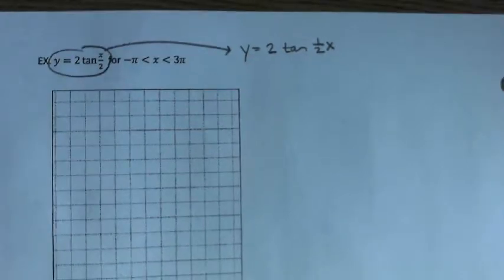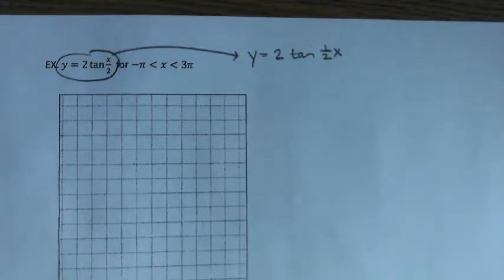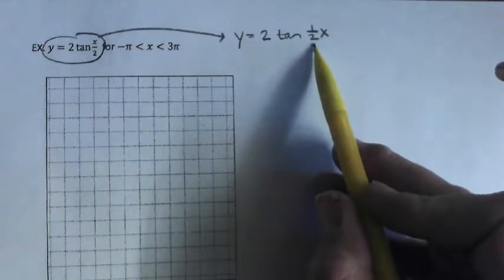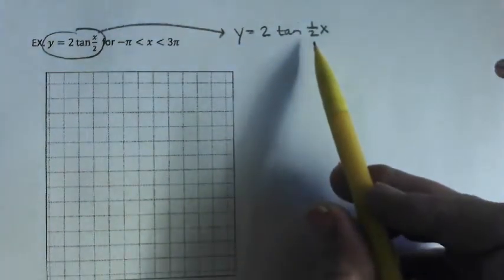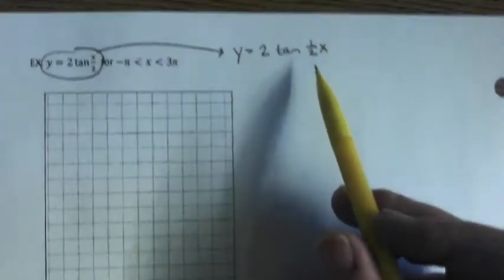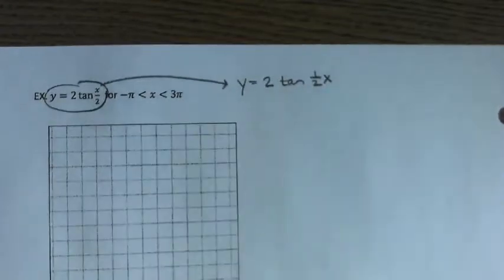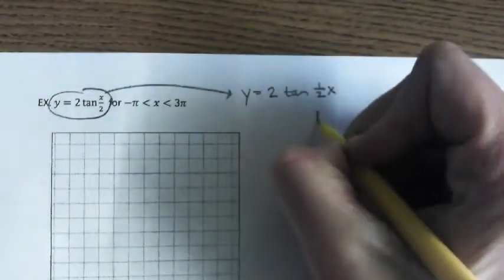So the way I like to do tangents is focusing on the location of your asymptotes first. So for the tangent parent graph it's at the odd pi's over two. What does this do as far as horizontal stretching and compressing?